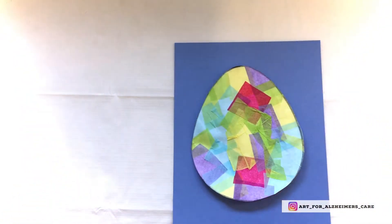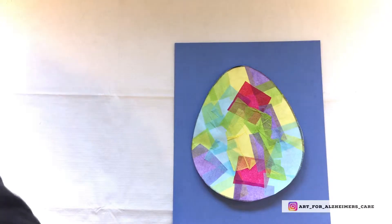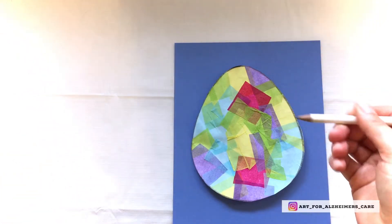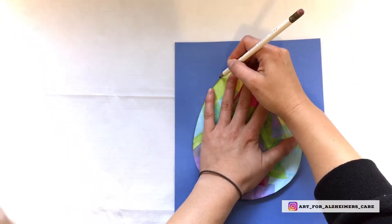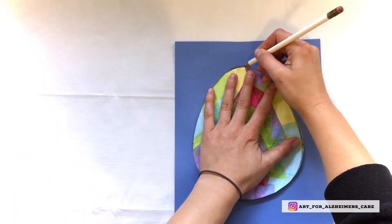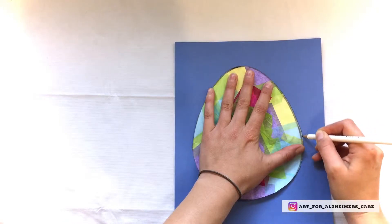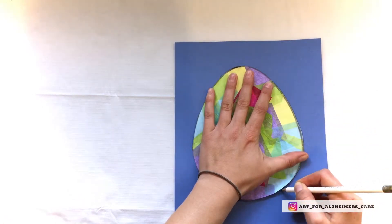And then you can grab a piece of cardstock or construction paper, whatever color you choose. I'm using a pencil here but of course you can use a marker too. And go ahead and trace the outline of your egg onto the colored paper.